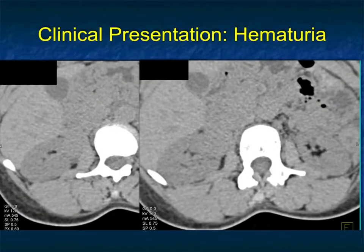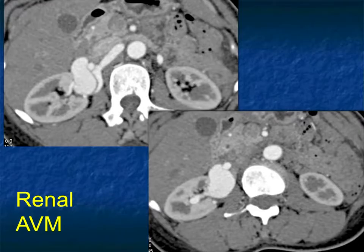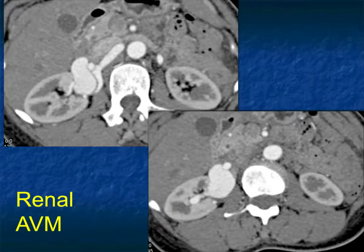One of the challenges with non-contrast CT is that you don't see the vessels, so things like AV fistula, aneurysms, and renal vein thrombosis can be missed. In this patient with hematuria, on non-contrast you don't see anything obvious — maybe a slight difference in fat in the hilum. But when you give contrast, you see a beautiful example of a renal AV malformation. Vascular processes are not that common, but they do occur, and contrast is essential to see the findings.